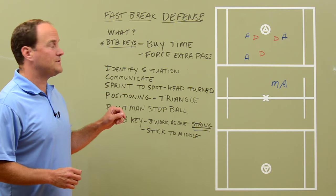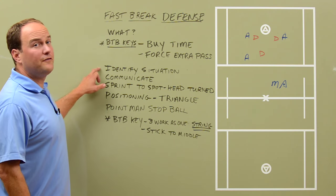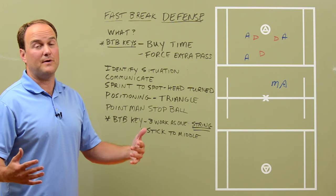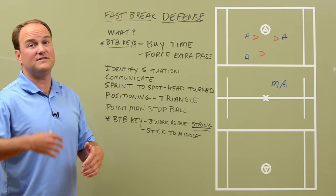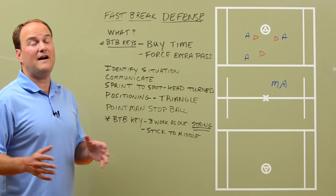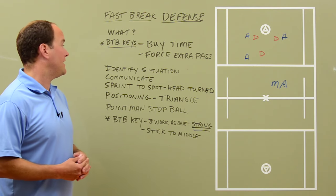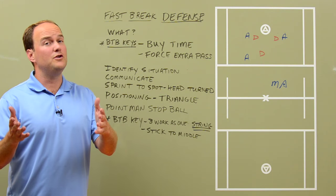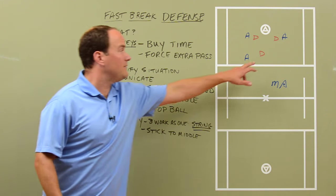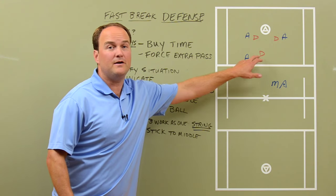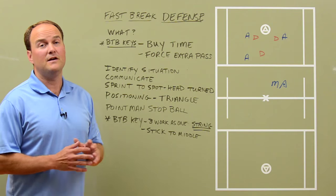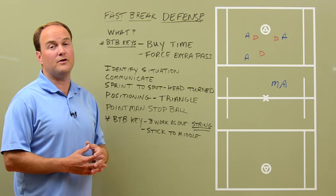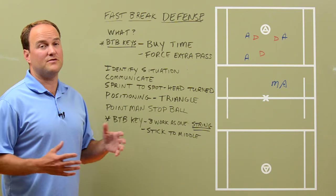Moving on to defending the fast break — the first thing we need to do is identify the situation. Is it a fast break? Is it a slow break? Is it a 6-on-6? Identify it as a fast break and then communicate that to your teammates. Just because you know it's a fast break — maybe you're the point defenseman — doesn't mean the two low guys do. You need to communicate that to each other and make sure everyone's on the same page.